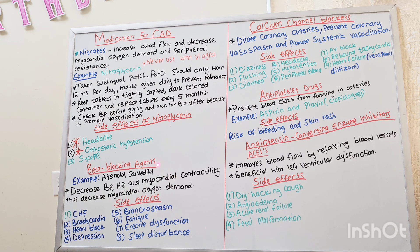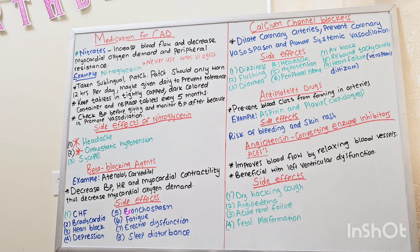Now let's discuss another class of medication used to treat CAD, which is beta-blocking agents. Examples are atenolol and carvedilol. Beta-blocking agents decrease blood pressure, heart rate, and myocardial contractility, thus decreasing myocardial oxygen demand. Side effects of beta blockers are CHF, bradycardia, heart block, depression, bronchospasm — it should be used cautiously in asthma patients since it causes bronchospasm — fatigue, erectile dysfunction, and sleep disturbance.